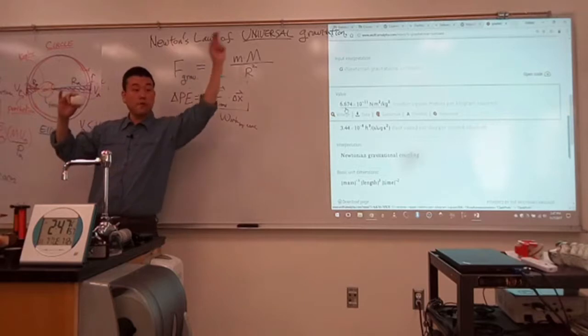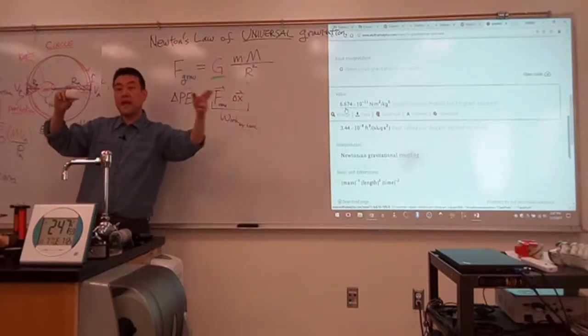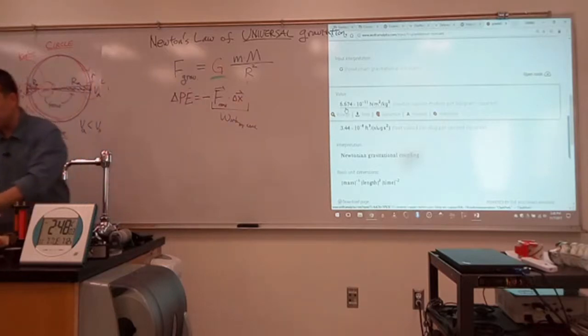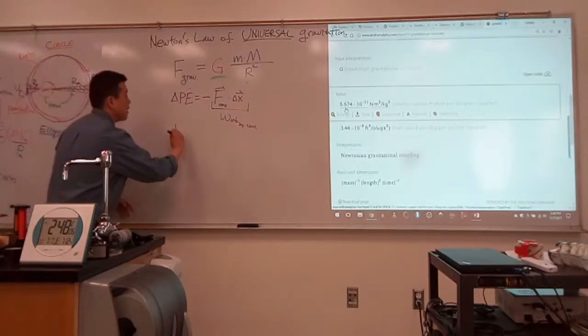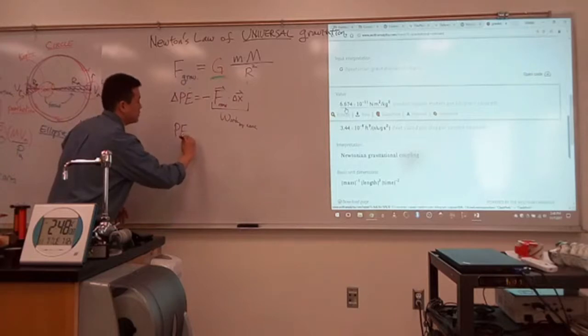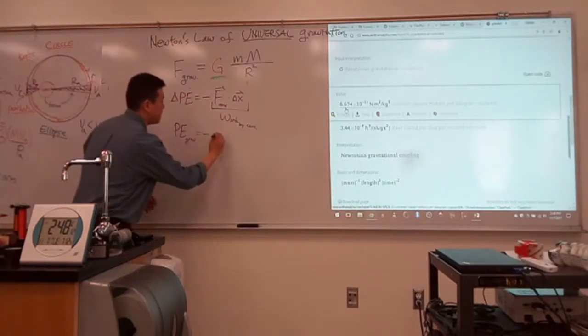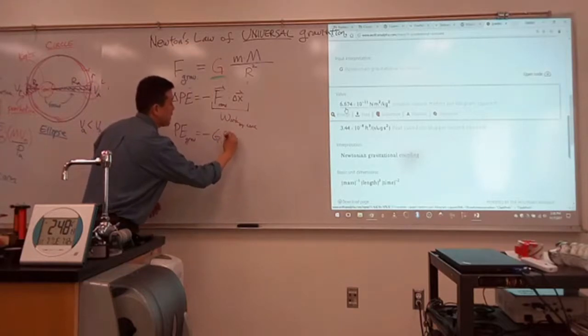Yeah, it decreases, right? So, you go from infinity to some negative potential energy, right? With the convention, this is the form of the gravitational potential energy. Gravitational potential energy Ugrav is given by minus G m times big M over R.